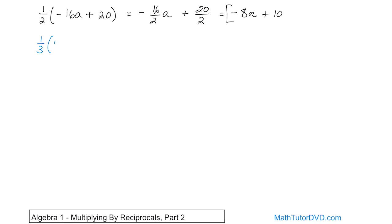1 third times 18b minus 39. Again, we have this reciprocal out here, which is the reciprocal of the number 3. So we're just going to treat it like a fraction, which is what it is. Multiply it in to here. And what we'll get is 18.